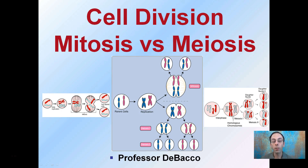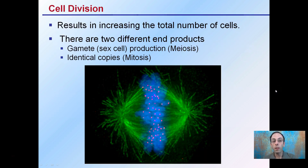In plants and animals, cells go through the process of division, and it can be through mitosis or meiosis, depending on what end product they're producing. Mitosis is going to produce two identical copies of the original cell. Meiosis is going to produce gametes, such as pollen or egg. Cell division results in increasing the total number of cells — gamete or sex cell production is through meiosis, and identical copies would be through mitosis.